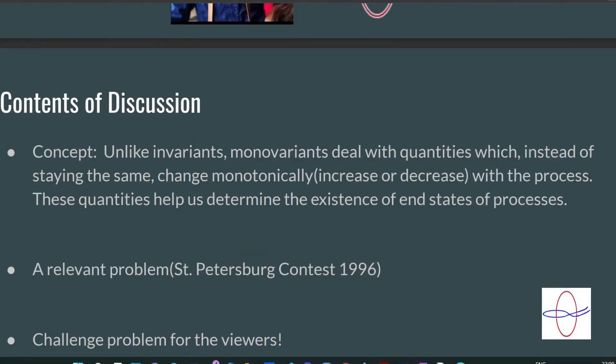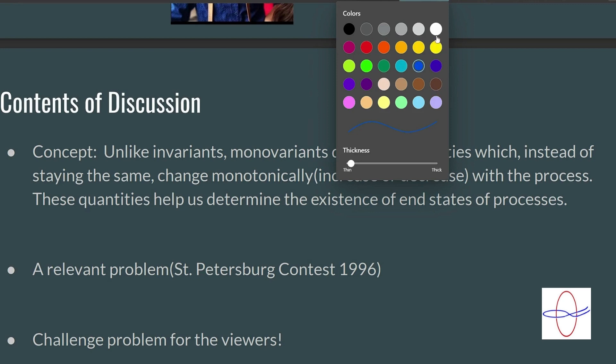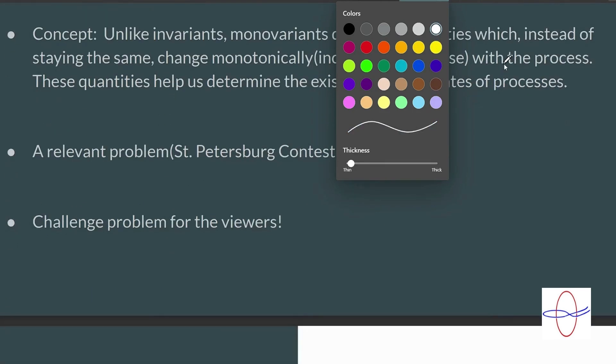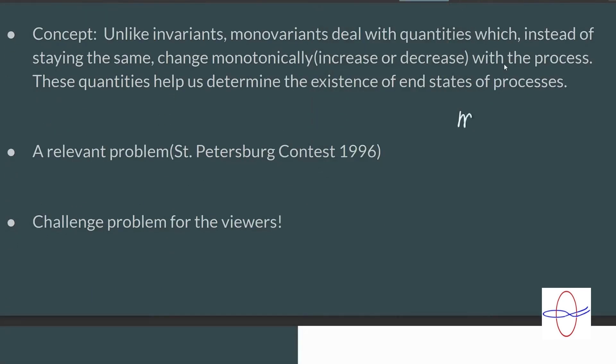The concept is that unlike invariants, monovariants deal with quantities which instead of staying the same change monotonically, as in increase or decrease in the same way with each step. For example, if my monovariant is m, then with each step of the process it can either increase or stay the same or increase. But the point is that it will never decrease.